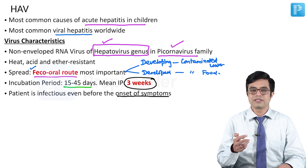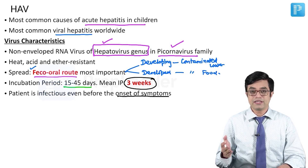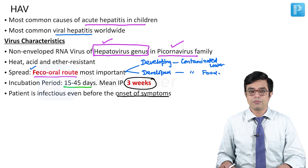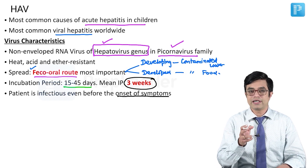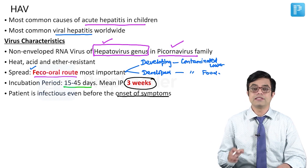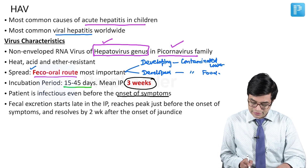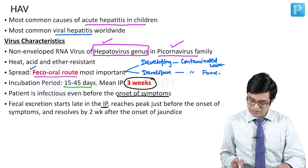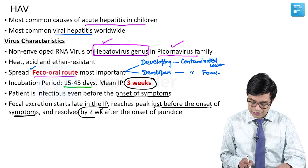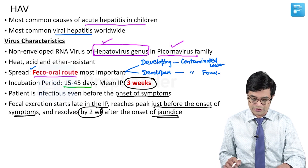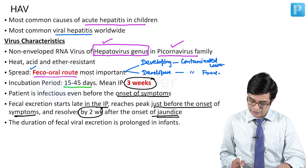This entire process takes about 7 to 10 days to develop. But the incubation period is between 15 to 45 days, so the patient is infectious even before virus shedding in the stool begins. Fecal excretion, according to Nelson, starts late in the incubation period, reaches peak just before the onset of symptoms, and resolves by 2 weeks after the onset of jaundice. The duration of fecal viral excretion is prolonged in infants.